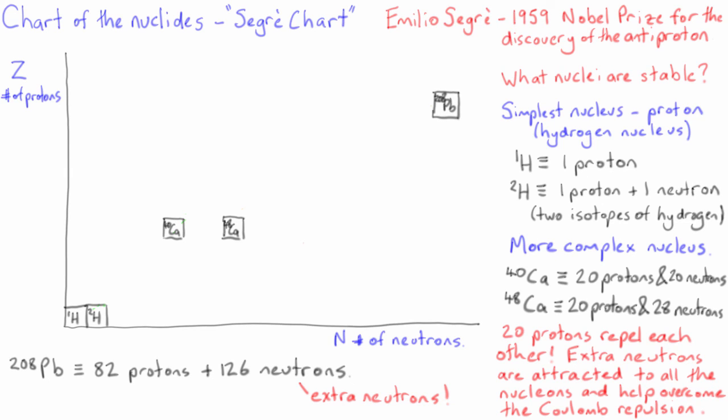For light nuclei, the line of stable nuclei roughly follows the diagonal along N equals Z, with equal numbers of protons and neutrons.